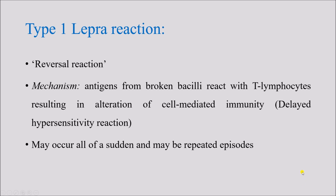Type 1 lepra reaction, also known as reversal reaction, has a mechanism of delayed type hypersensitivity. It occurs due to antigen from broken bacilli reacting with T lymphocytes, resulting in alteration of cell-mediated immunity (CMI). The antigen from broken bacilli interacts with T lymphocytes, causing alteration in CMI, which leads to the delayed type hypersensitivity reaction.